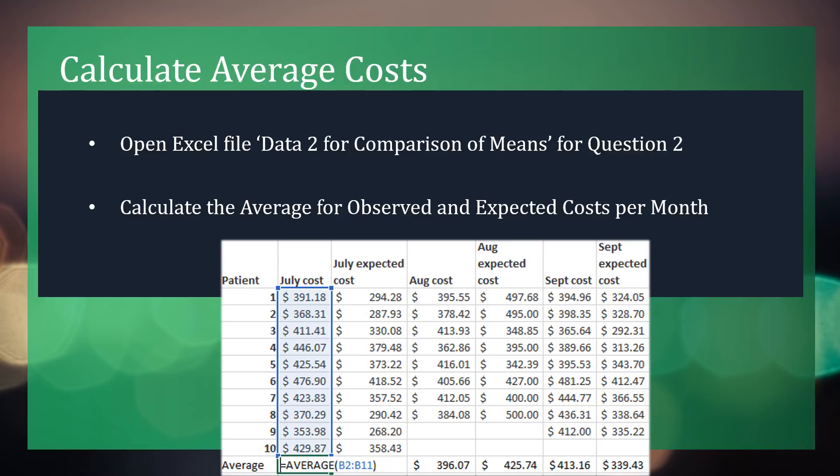We can begin by calculating average costs. Open the Excel file data 2 for comparison of means for question 2. We want to calculate the average for observed and expected costs per month. We can do that by selecting the cell beneath July costs and entering the formula equals AVERAGE(B2:B11). Hit enter and drag the cell to the right to populate the remaining fields.